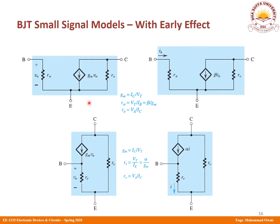Now here are your models. This is your pi model: rπ is connected between base and emitter, and vπ is simply the voltage between base and emitter. The dependent current source ic = gm·vπ, where vπ = vbe. This relationship ic = gm·vbe will be important going forward.